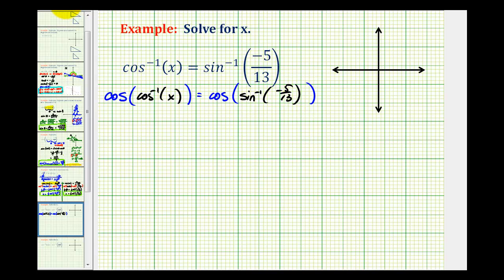Remember the cosine function and the inverse cosine function are inverses of one another. These two functions undo each other, leaving us with just x on the left side of the equation.